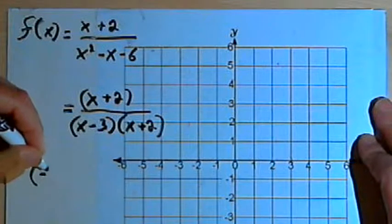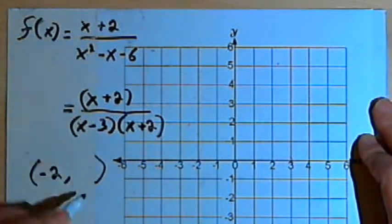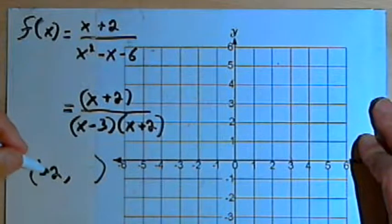So we're going to have a hole at negative 2, comma, something. The something is the y-coordinate for that location. So here's how we're going to find the y-coordinate.